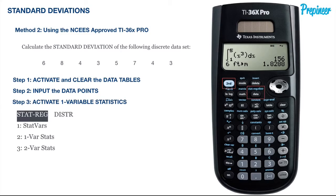Now that we are back to the home screen, we need to activate the one variable statistics functionality to begin our calculations. To do this, click the second button and then the data button to activate the stat regression distribution functionality indicated in blue. You will be brought to a screen similar to this one, then click the down arrow to select option two for one variable statistics.